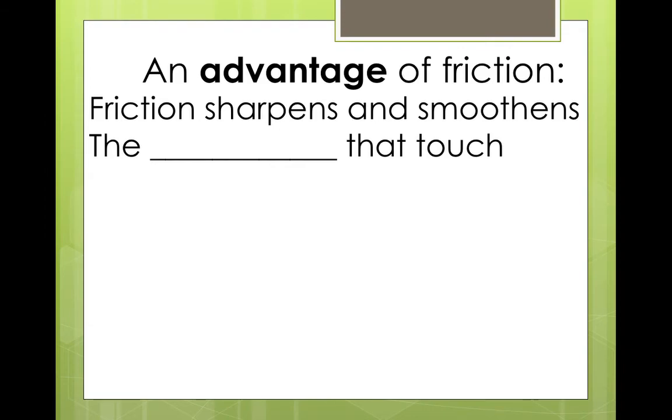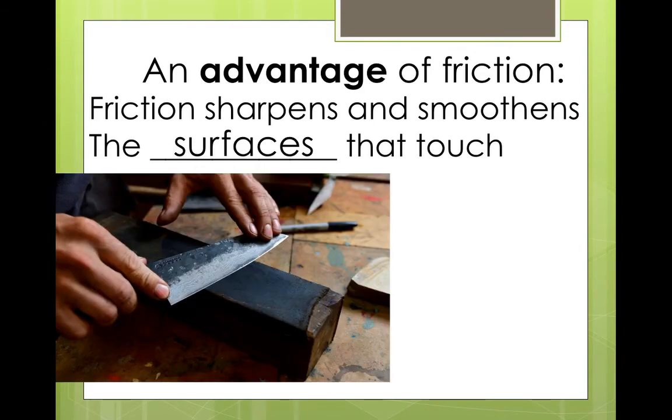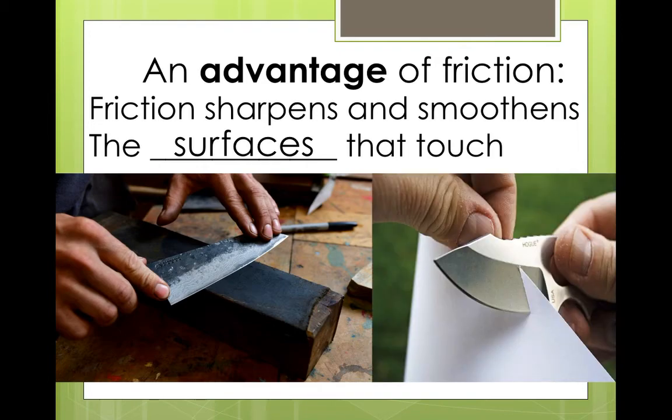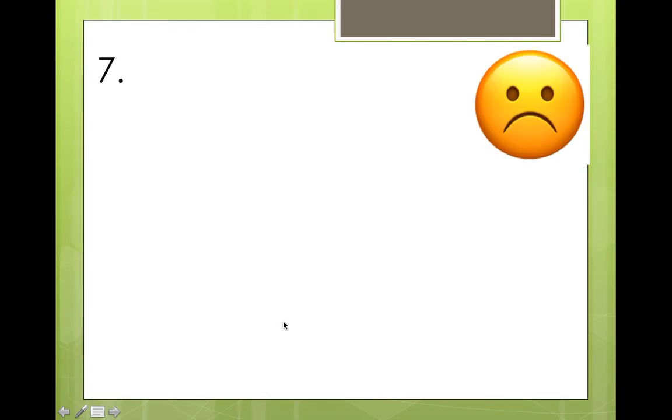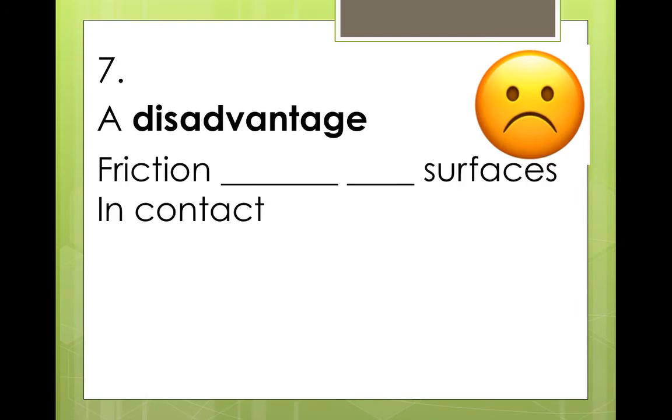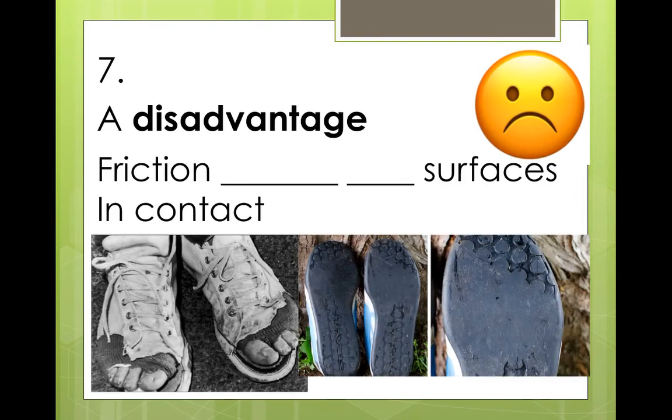Remember, an advantage of friction is that friction sharpens and smoothens the surfaces that touch. We need friction to have very sharp knives. Sharp knives to cut food. But, this leads to a disadvantage. Friction wears out surfaces in contact. Because of friction, our shoes get worn out. Friction wears out surfaces in contact.